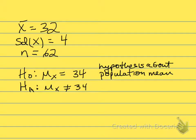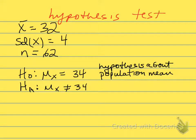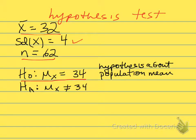Here's another example of doing a hypothesis test for the sample mean. Suppose we had a sample of 62 individuals, a sample mean of 32, and a standard deviation of 4. We have a null hypothesis that the population mean is 34, and an alternative hypothesis that it's not 34.